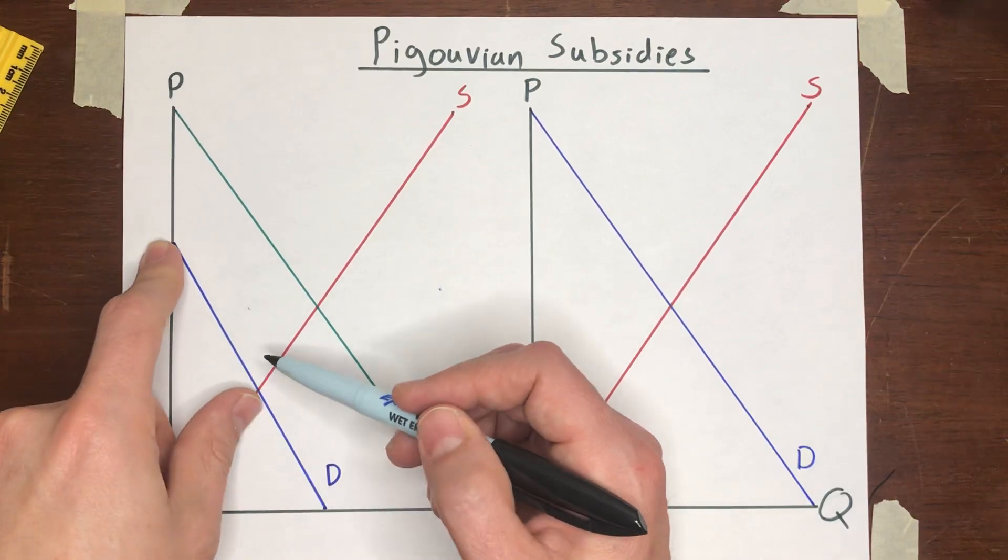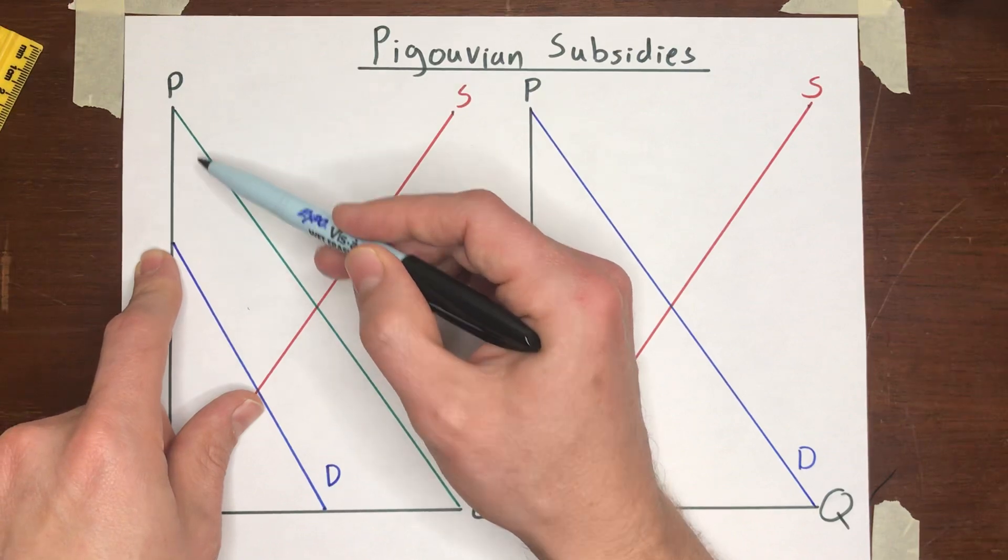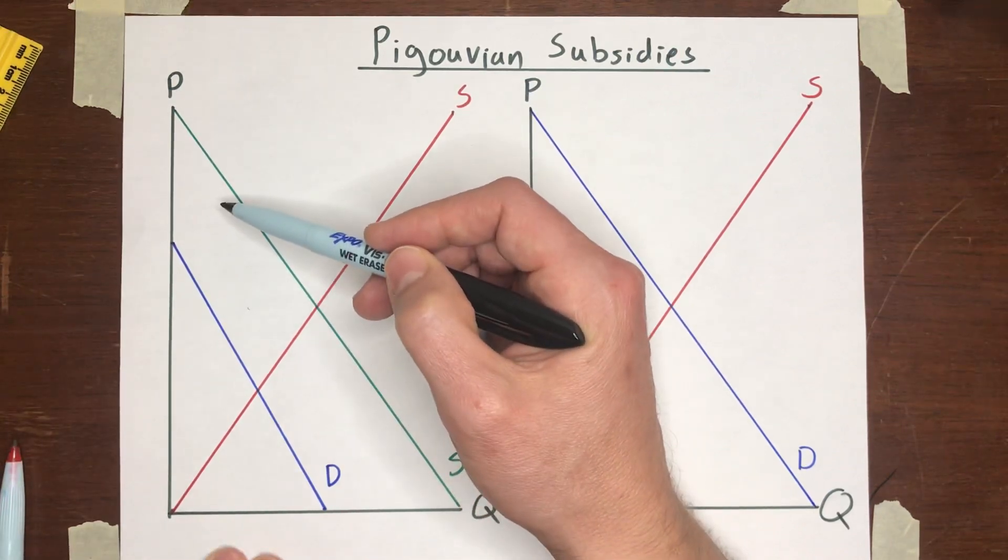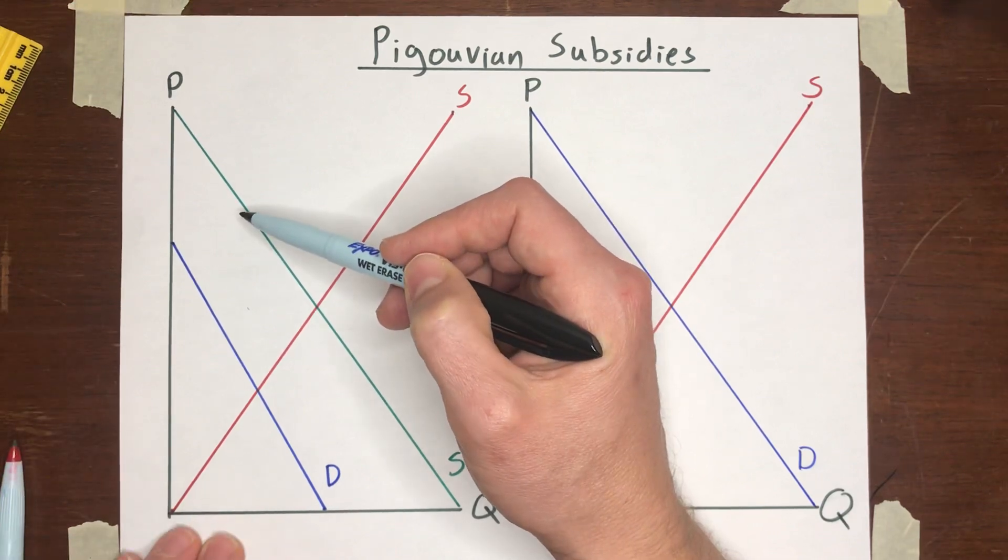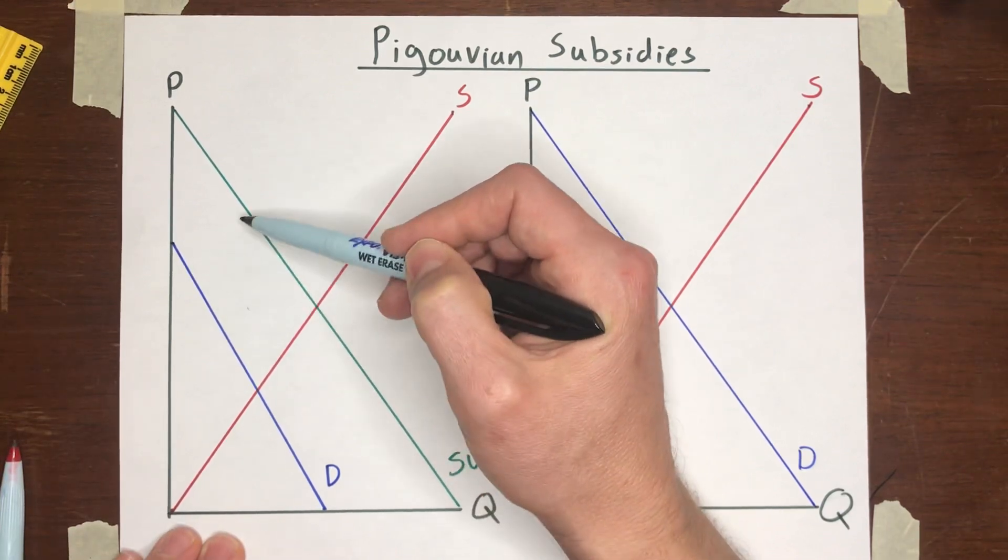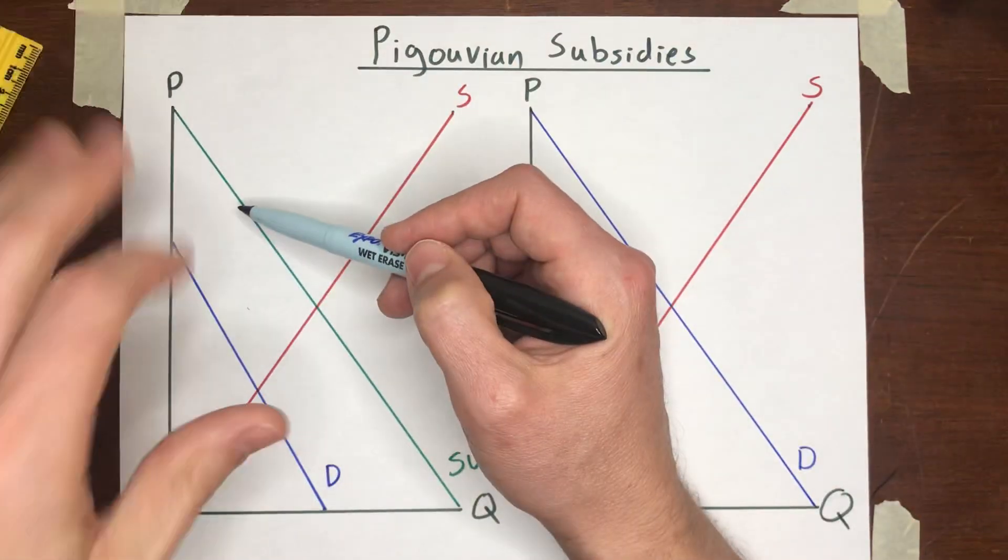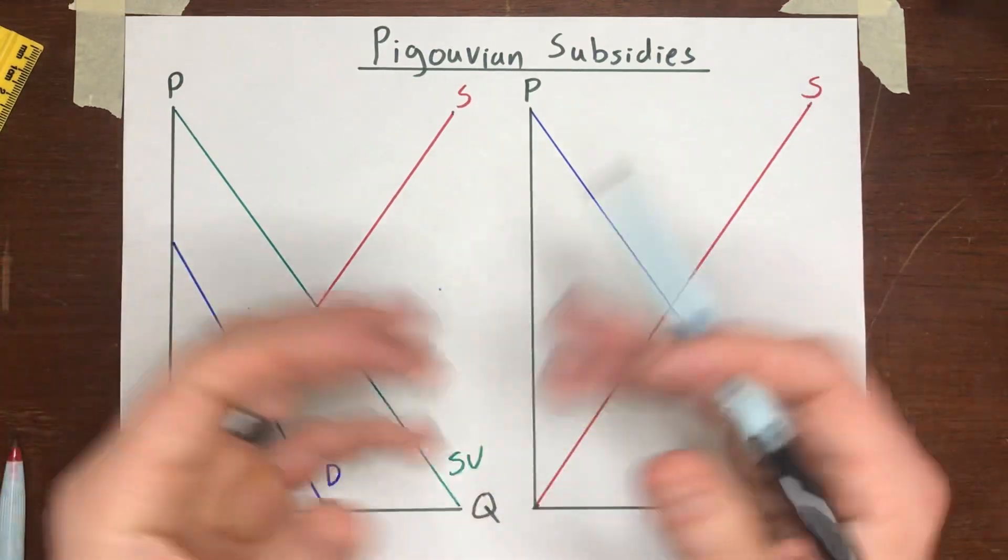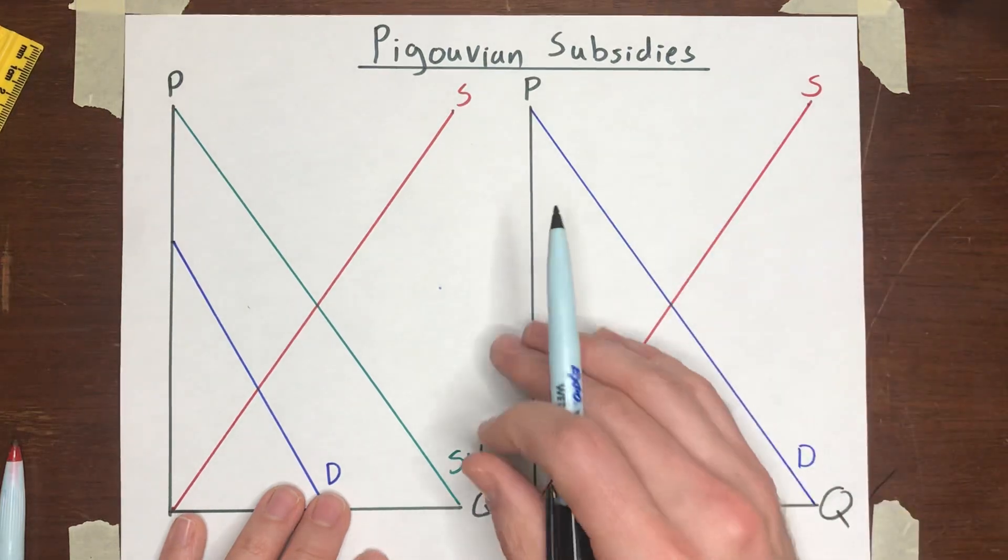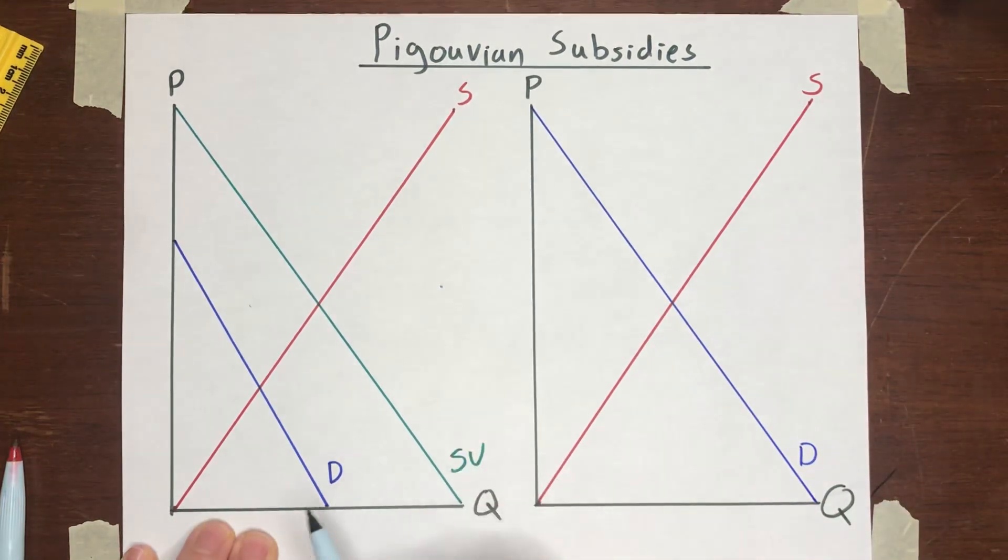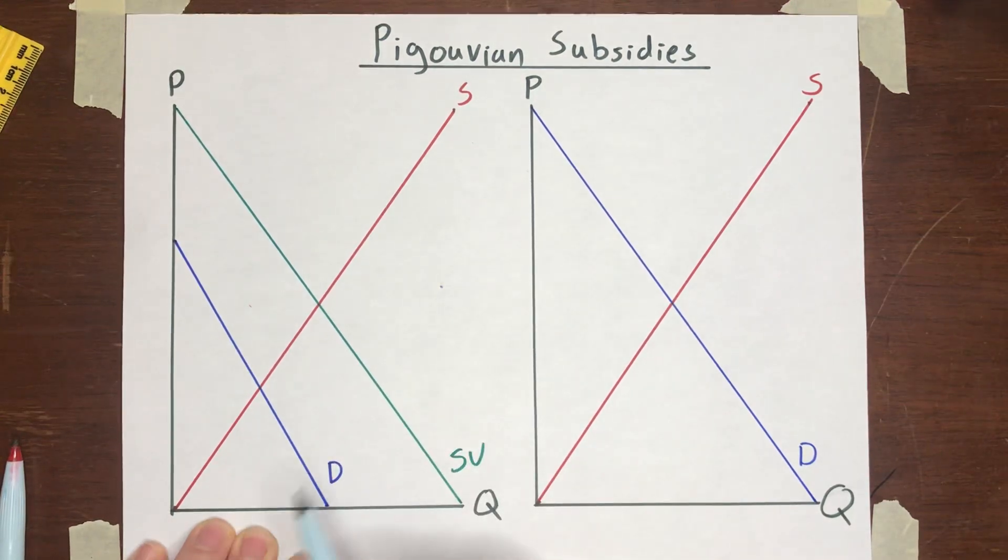However, their transactions in this market are having a spillover benefit to other people. So this is the extra security that they're providing to other people in the neighborhood who haven't hired security guards for themselves. Or this is the extra property value that they're conferring on neighboring properties when they redevelop some area into a park or a mall or a theater or something that's valuable and is going to attract a lot of people.